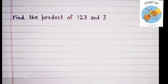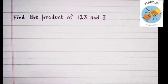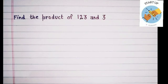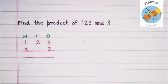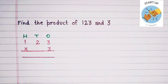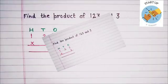Let's start by finding the product of 123 when multiplied by 3. First of all we need to arrange them according to the place value. 3 will be written under the 1's place, 2 will be written under the 10's place, and 1 will be written under the 100's place. And the number by which we will multiply, that is 3, will also be written under the 1's place.